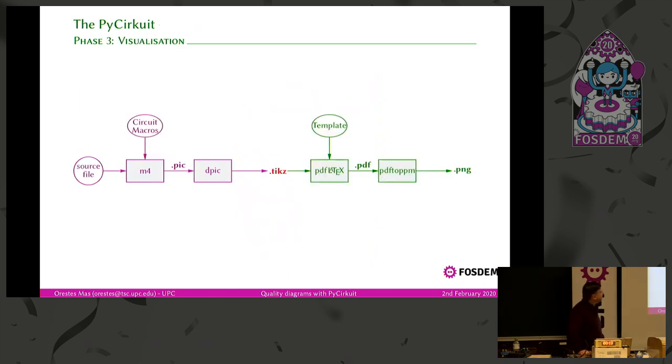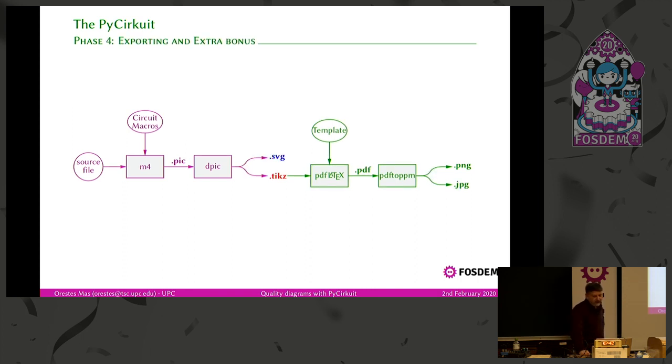So here we have the two steps I mentioned earlier, are here depicted in FOSDEM violet color, and you end up with a TikZ file, which you can embed this in a minimal LaTeX document, process it to obtain a PDF file, and then this PDF file processes it again to obtain a raster file, a PNG file in this case, to visualize it. So, as a bonus, at the user request, we can also generate other formats, like SVG, JPEG, etc. So this is the whole picture, essentially.